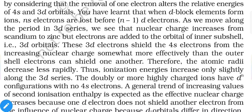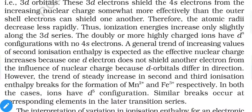A general trend of increasing second ionization enthalpy is expected as the effective nuclear charge increases, because d orbital electrons do not shield other electrons from nuclear influence as effectively. When certain electrons are removed, the number of protons remains the same while electrons decrease, so the proton-to-electron ratio increases, meaning greater attraction — making removal of the next electron progressively more difficult. This is why first ionization enthalpies are always lower than second, and second always lower than third, for the same element.